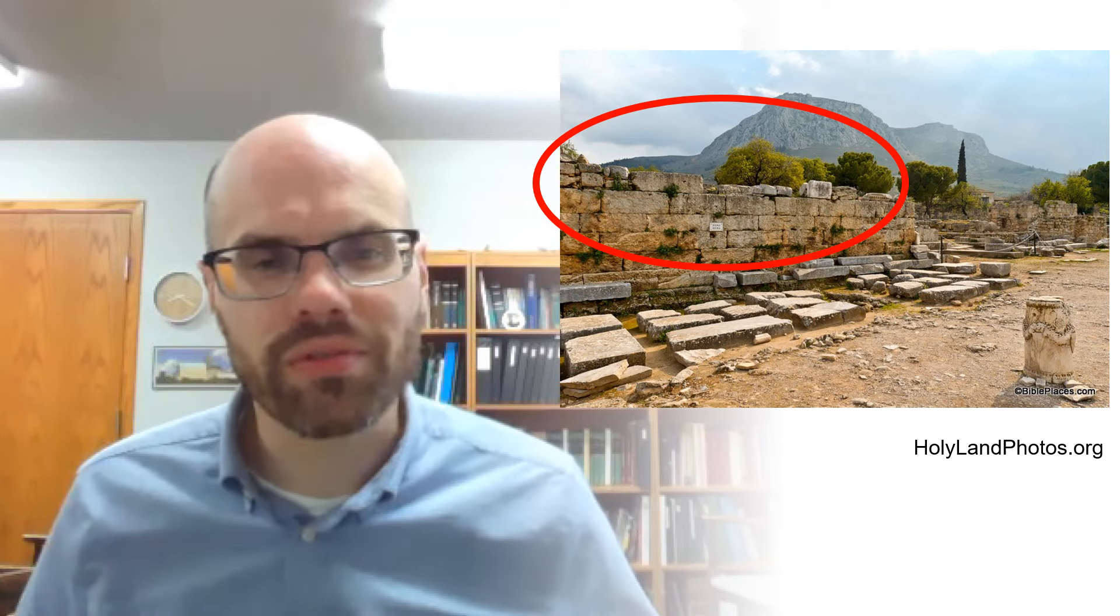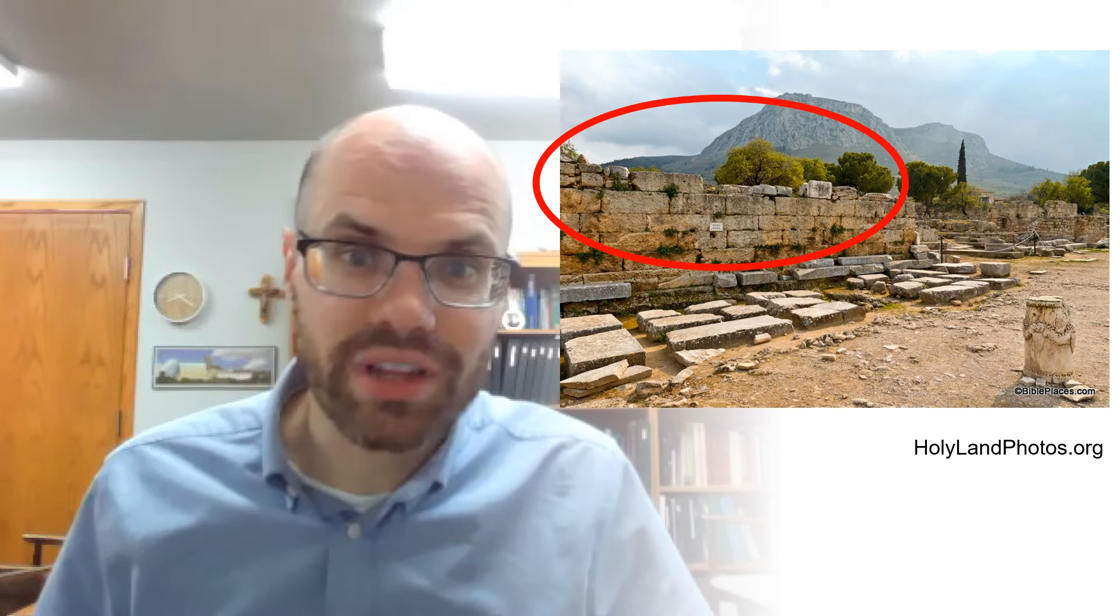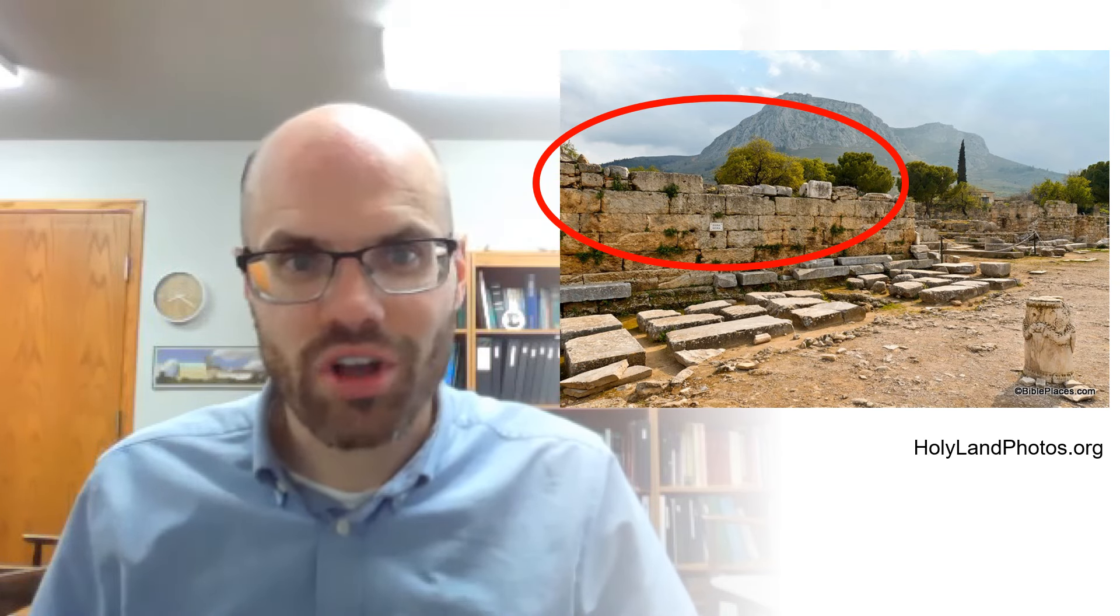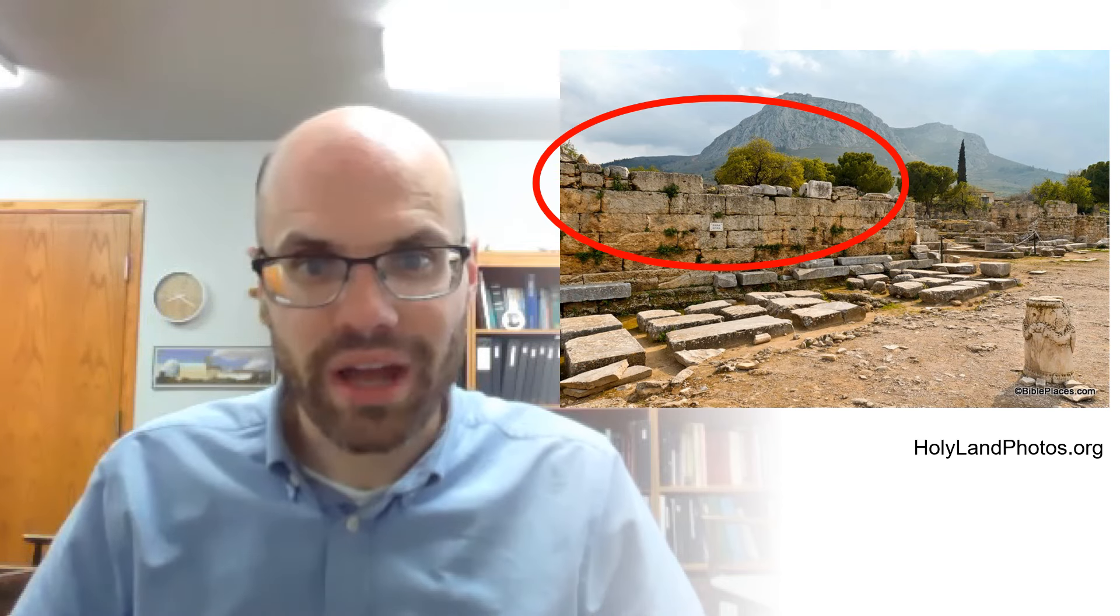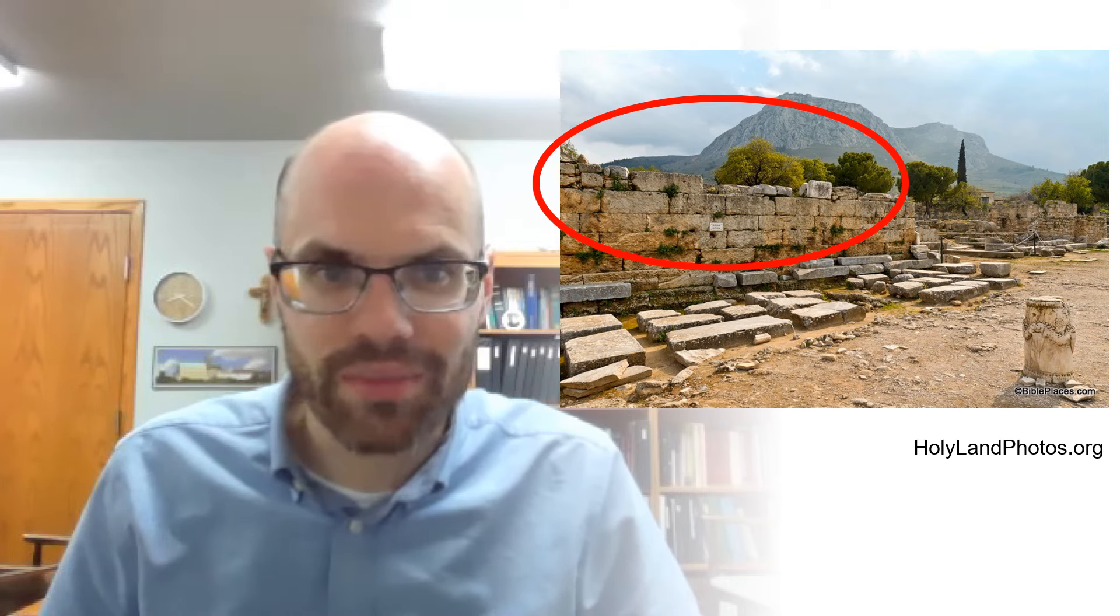So do you want to put yourself in Paul's sandals? Well actually, this trial in Corinth is probably one of the more certain places you can see where this trial likely took place at what's called the Bema, or the judicial bench. It's the structure on the left half of the picture there. I have it circled in red.